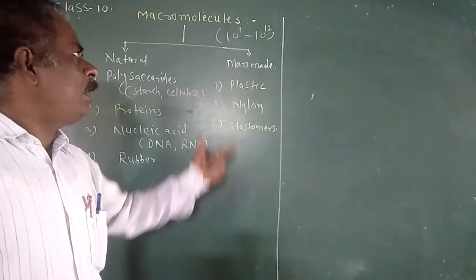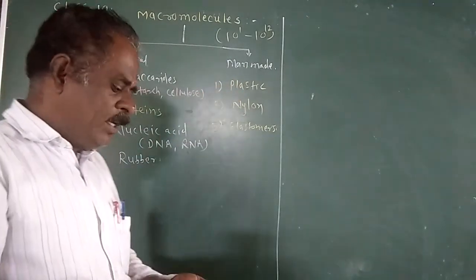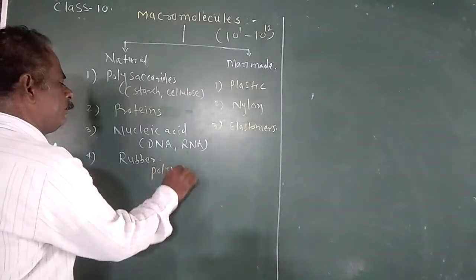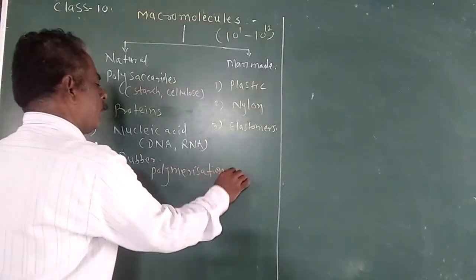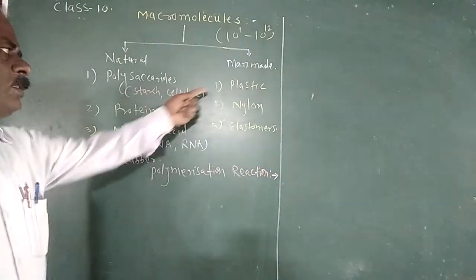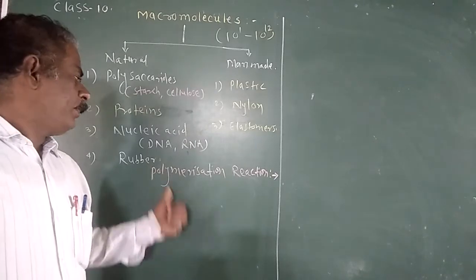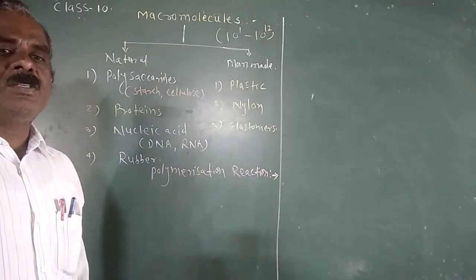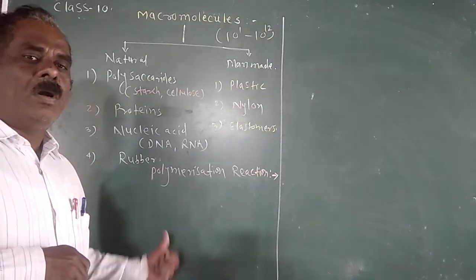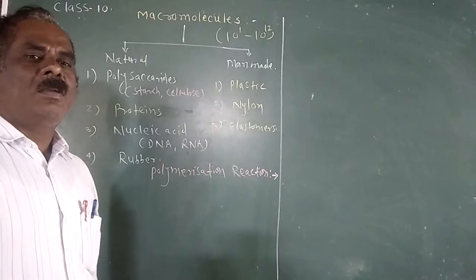Remember, all artificial macromolecules are manufactured by the polymerization reaction. Plastic, nylon, and elastomers are prepared by polymerization reaction. In the polymerization reaction, the substances used are called monomers, and the substances formed after the polymerization reaction are called polymers.